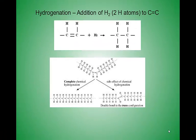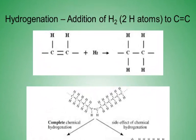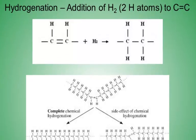Recall from your studies of alkenes the hydrogenation reaction, where an H₂ molecule was added to the carbon-carbon double bond. Essentially, two hydrogen atoms were added to the carbons of the double bond. This reaction saturated the carbons in the double bond with hydrogen.